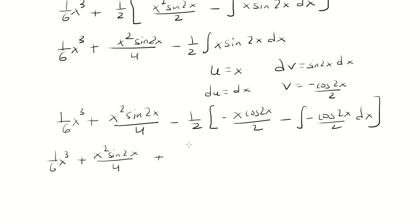So negative 1 half times a negative 1 half would be a positive 1 fourth. And then we have x cosine 2x on top. The two negatives here will make it a positive. But we have a negative 1 half and another 1 half here. So that's negative 1 fourth integral cosine 2x.